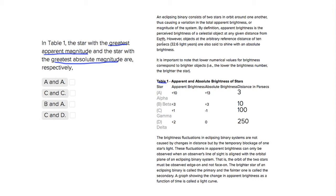It's important to look at this part - it tells us that lower numerical values for brightness correspond to brighter objects. So the lower this value or this value, the brighter, and therefore bigger, the star is.